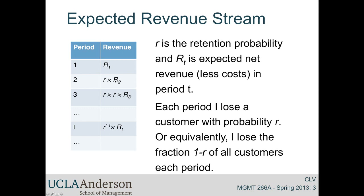In the second year of ownership, I expect to get big R sub two revenues, assuming that person remained as a customer. So I have to take that into account to compute expected revenue. It would be the retention probability — written as little r, a number between zero and one — times the expected revenue given that they are our customer. Our customer survives to the third period only if retained through both the second and third periods, so that's r squared times the expected revenue. In general, the formula is little r to the t minus one power times big R sub t.